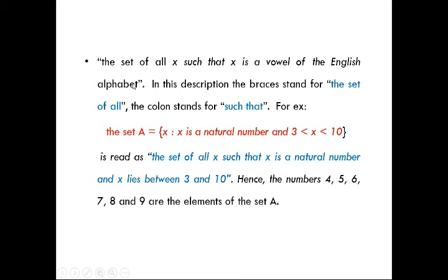In set builder notation, the braces stand for 'the set of all' and the colon stands for 'such that.' For example, A = {x : x is a natural number and 3 < x < 10}. If this is given in set builder form and I want to write it in roster form, since x lies between 3 and 10, the roster form would be {4, 5, 6, 7, 8, 9}.